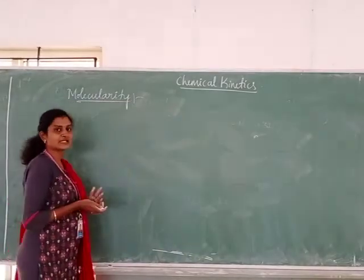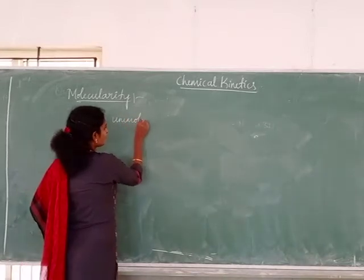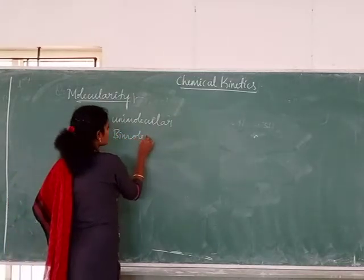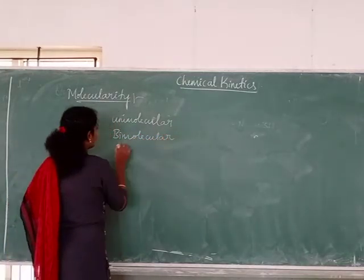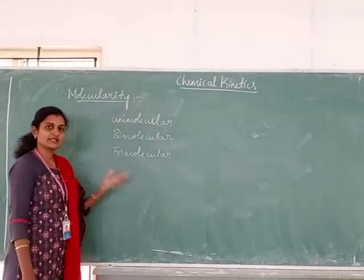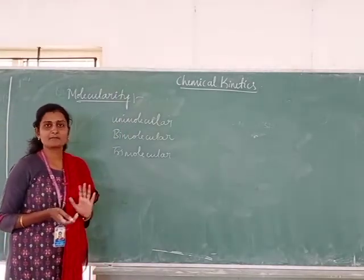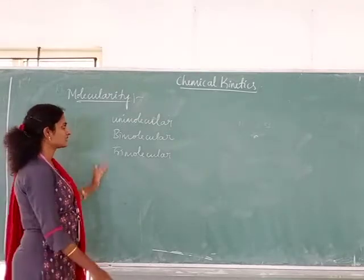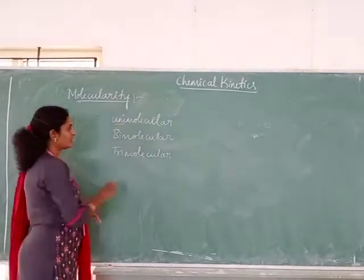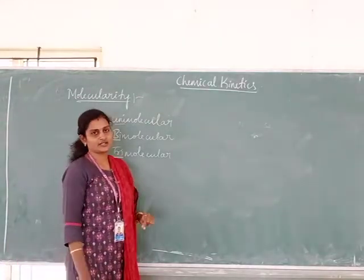Molecularity can be classified into different types: unimolecular reaction, bimolecular reaction, trimolecular reaction and so on. But after 3, it is not possible — those will come under different steps called mechanism. So these are the common types: unimolecular is 1, bimolecular is 2, trimolecular is 3.